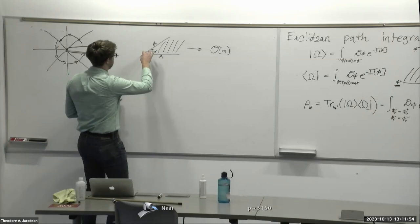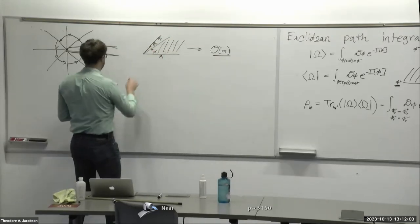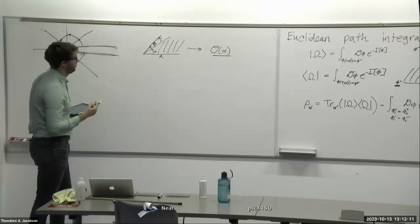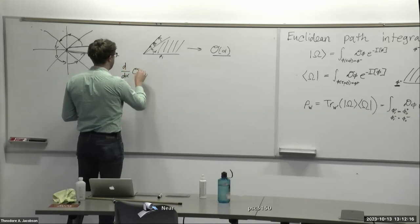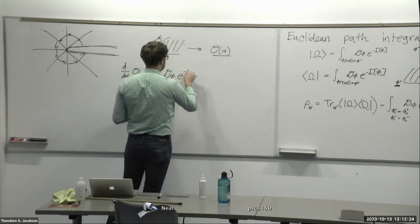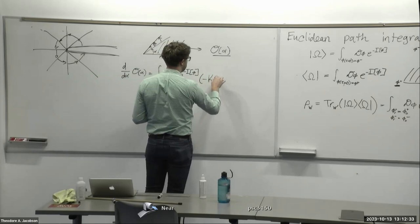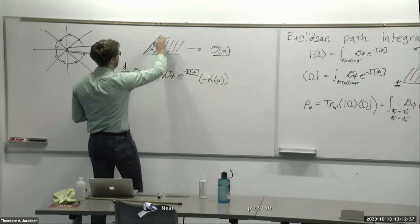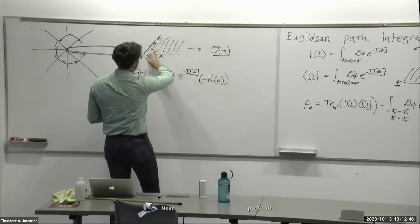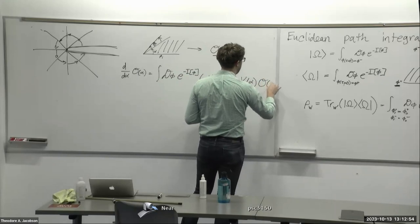To identify O(α), increase the angle by a small amount and ask how the operator changes. A small increase in the path integral inserts a stress tensor, so d/dα O(α) is represented by a path integral that brings down a stress tensor, written as inserting an operator K(α) at the end. As an operator, since we've added this on at the end of the path integral, this corresponds to multiplying by K(α) on the left of the original operator O(α).